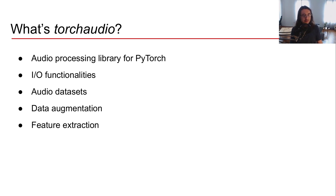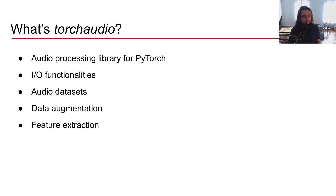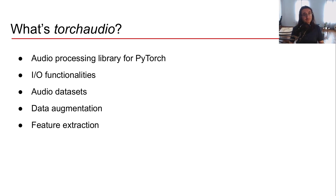TorchAudio has a lot of different components and functionalities. It has facilities for input and output with all sorts of audio data, pre-built audio datasets you can easily query and download, and data augmentation tools like time stretching or pitch shifting. Most importantly, TorchAudio has native feature extraction for spectrograms, mel-spectrograms, and MFCCs — all running on GPU for maximum efficiency.